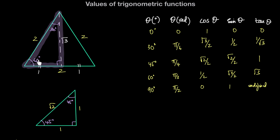Similarly, for theta equal to 60 degrees, or pi over 3 radians, using the same right triangle: cosine of 60 is the adjacent over the hypotenuse, which is 1 over 2. Sine of 60 is the opposite over the hypotenuse, which is square root of 3 over 2. And tan of 60 is opposite over adjacent, which is square root of 3. We can always draw this equilateral triangle to recall the values of cosine, sine, and tan when theta is 30 degrees, or pi over 6 radians, and 60 degrees, or pi over 3 radians, respectively.